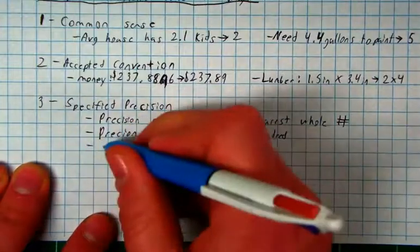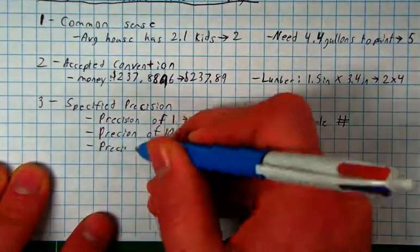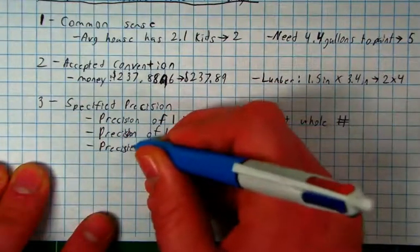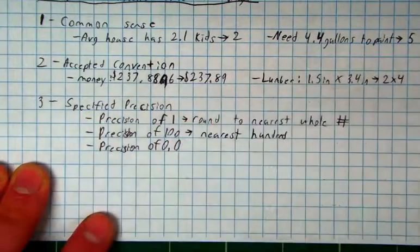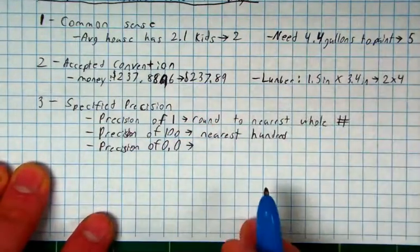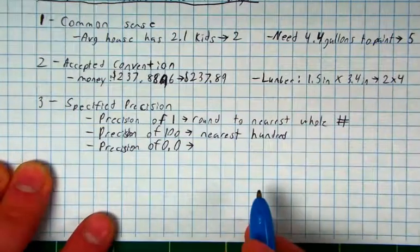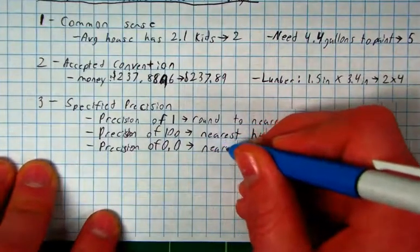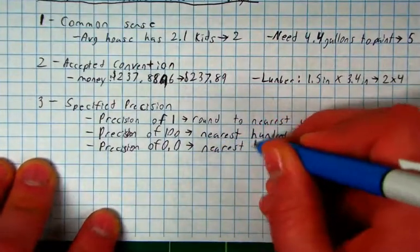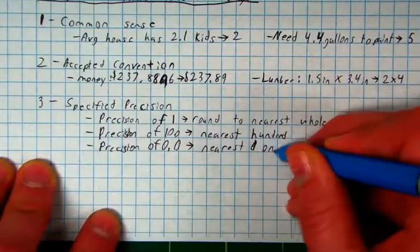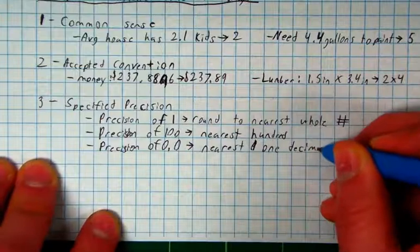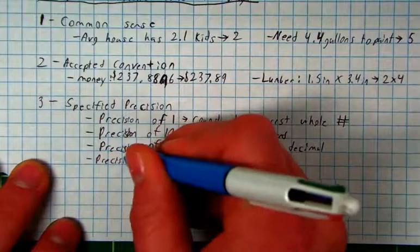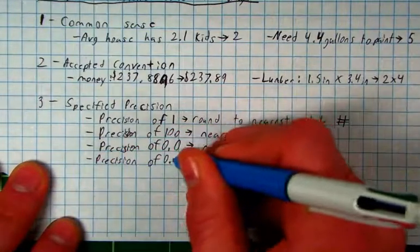If I say precision of 0.1. Any ideas on what I'm rounding to? The nearest 10th place, or I'm going to say the nearest 1 decimal. Write out the word 1, 1 decimal.